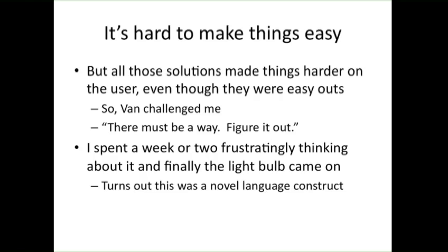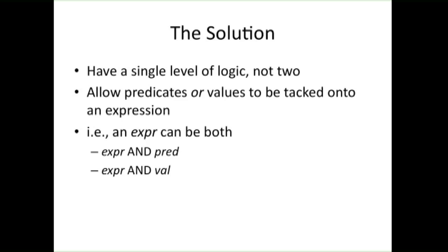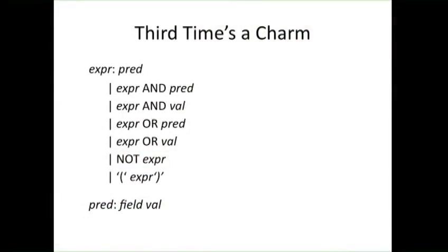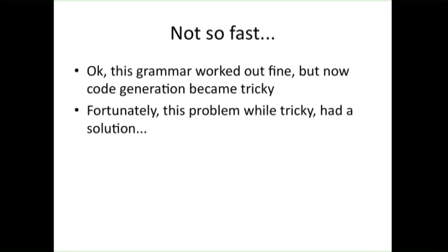The idea was not to try a two-layer structure, but to have a single layer and allow expressions to be built up with predicates tacked on — additional values attached via the grammar. The grammar is very simple. You have an expression that starts from a predicate and you can tack predicates or values onto the expression being built up. The problem was, while that worked grammatically, it became tricky to figure out how code would actually be generated using this grammar.